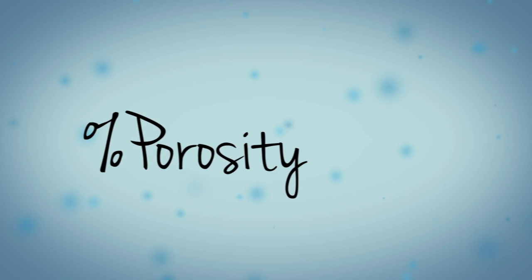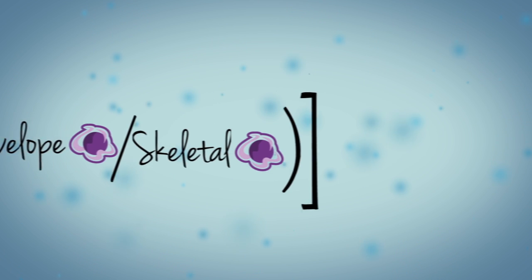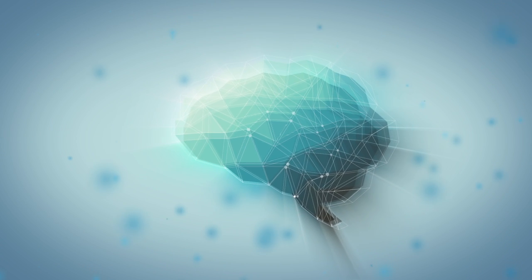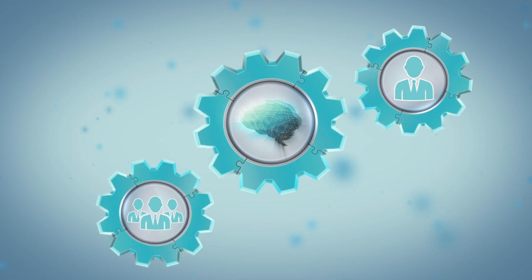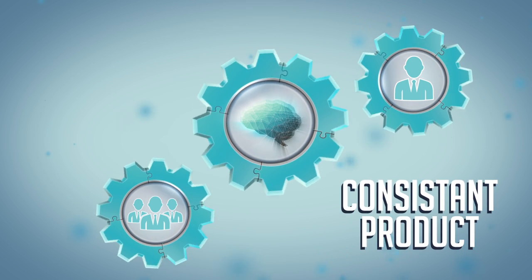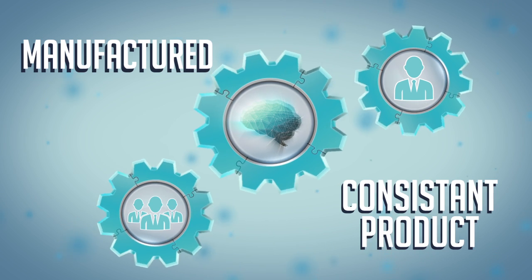Percent porosity equals 1 minus envelope density over skeletal density multiplied by 100. Armed with this data, the development scientist or manufacturing support group can have more confidence that consistent product is being developed or manufactured from the roller compaction unit operation.